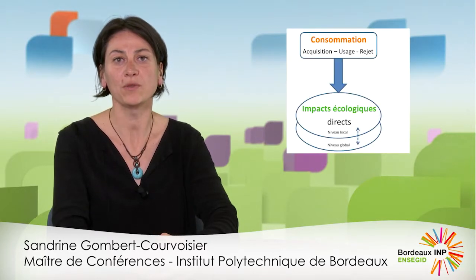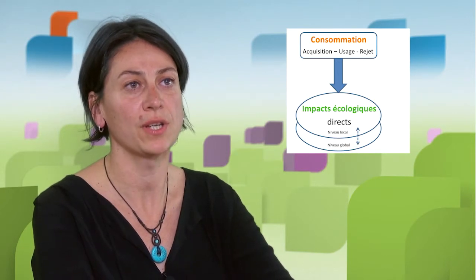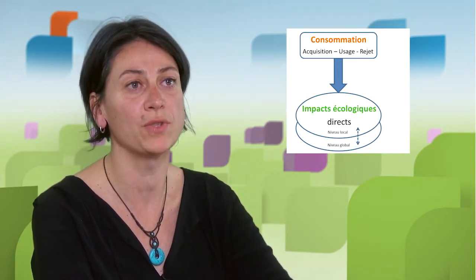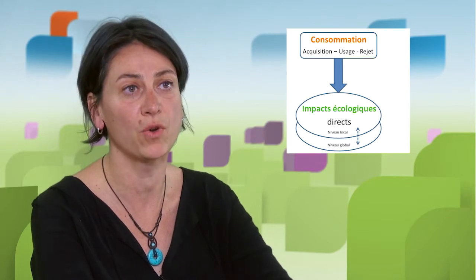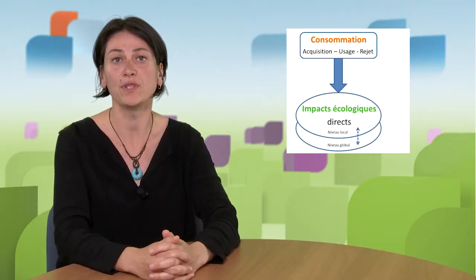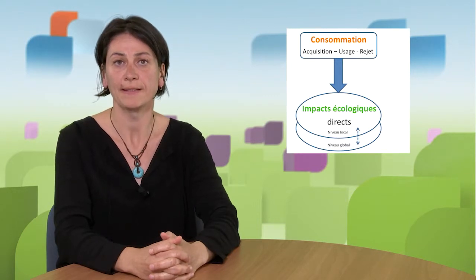Why look at responsible consumption when we talk about circular economy? Consumption has three phases: acquisition of goods and services, use of goods and services, and dumping of goods and services, which may have an impact on biodiversity or on various environments.